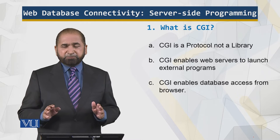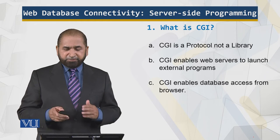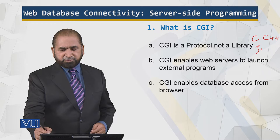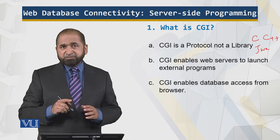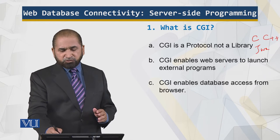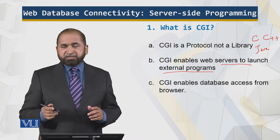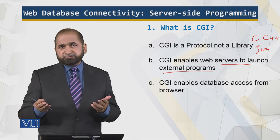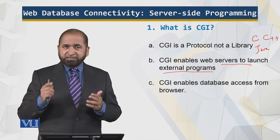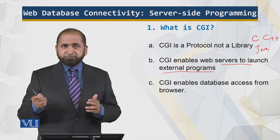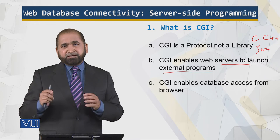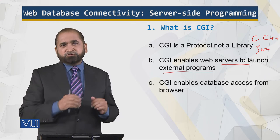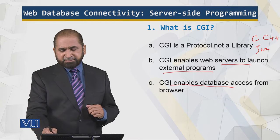CGI is not a library, it is a protocol, which means it is language independent. You can write a CGI script in C, C++, Java, and so on. CGI enables web servers to launch external programs. When you click on a link traditionally, the server opens a text file for you. But in a CGI environment, when you click on a link and there is a CGI script on the other end, the server launches that script. If it computes something, it returns the result as computed content to the end user. This enables database access from the browser.